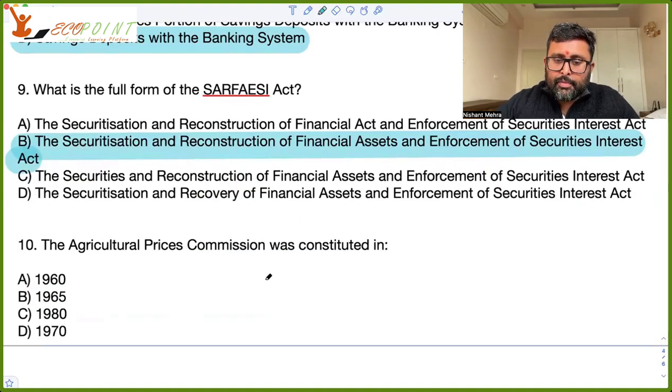Agricultural Price Commission was constituted in 1965. Its main aim was to ensure remunerative prices for farmers. It was renamed as CACP in 1985, Commission of Agricultural Cost and Price.